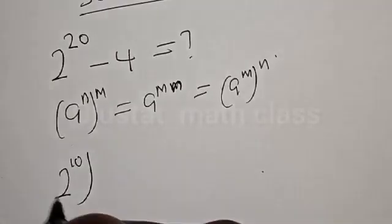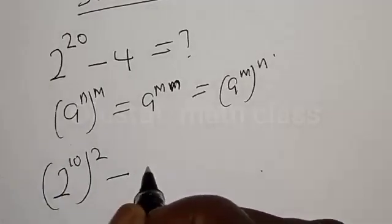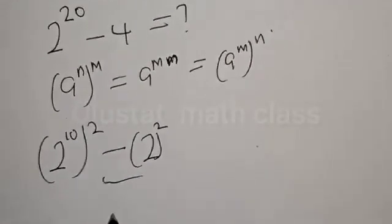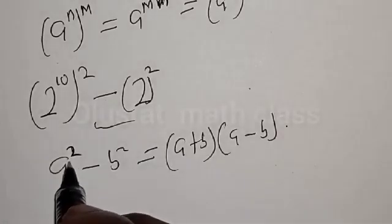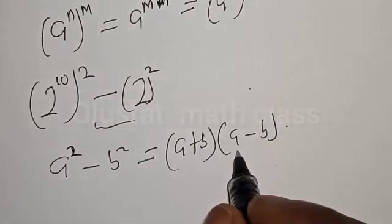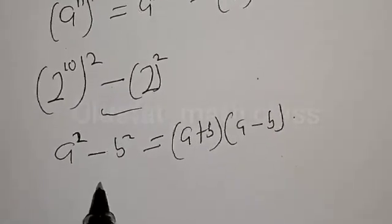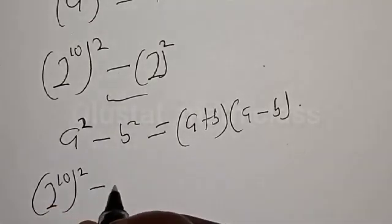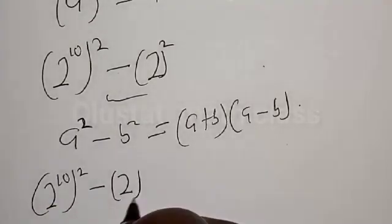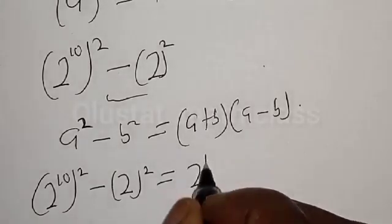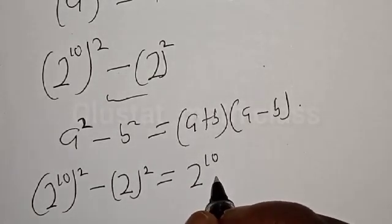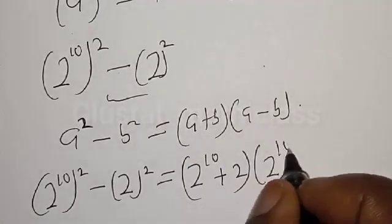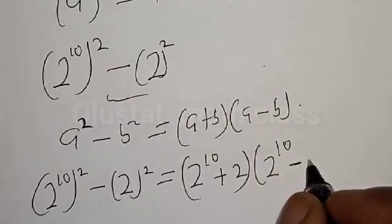Squared minus 4 can be expressed as 2 squared. This is a difference of squares. Remember, if you have a squared minus b squared, it is equal to (a plus b) into (a minus b). Our equation becomes: 2 raised to power 10 squared minus 2 squared, which equals (2 raised to power 10 plus 2) into (2 raised to power 10 minus 2).